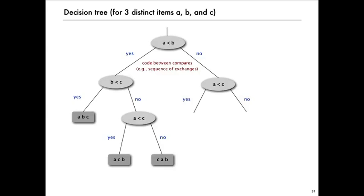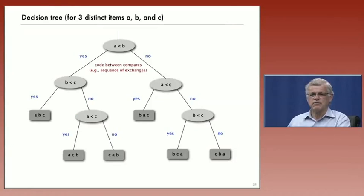And continuing on the right, perhaps the next compare is A less than C. And maybe if C is less than A, another compare B less than C. So, in this case, if you go from top to bottom in the tree, with three compares at most, you can determine the ordering of the three different items.